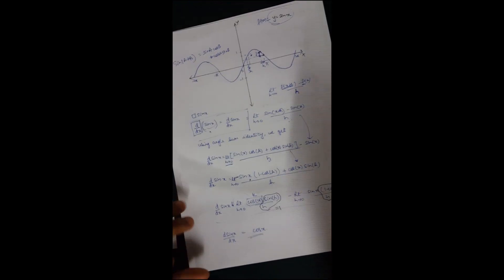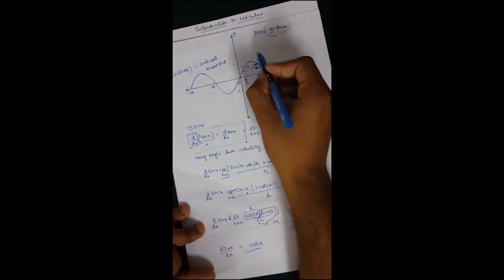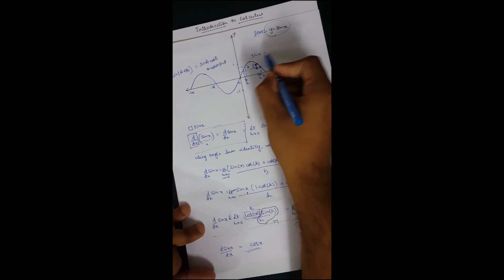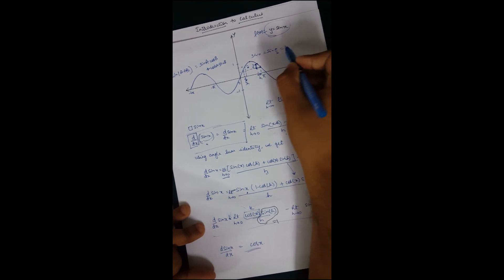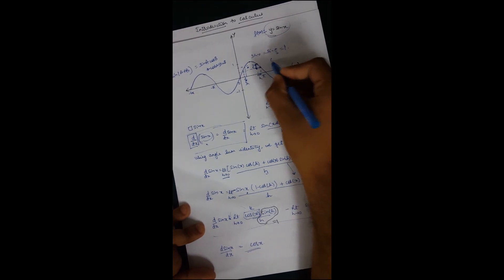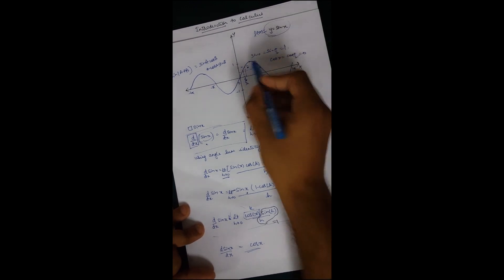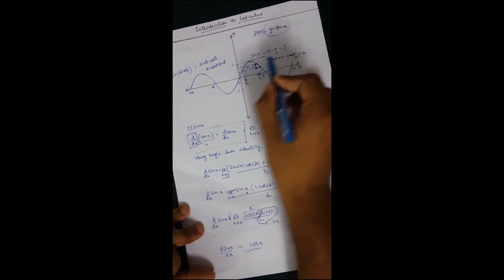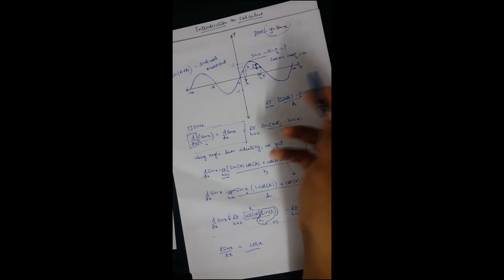The slope at every point of sin(x) is cos(x). To verify: at the topmost point, sin(x) equals sin(π/2) which equals 1, so the slope is cos(π/2) which equals 0. That's correct because the tangent at that point is parallel to the x-axis, meaning slope is 0. The result is confirmed.